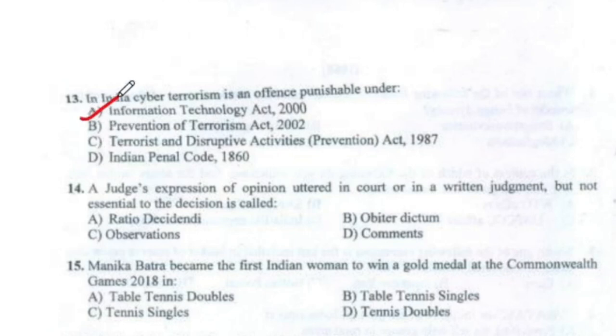Question 14: A just expression of opinion uttered in court or in a written judgment but not essential to the decision is called Option B — Orbiter Dictum, i.e., opinion of the court.